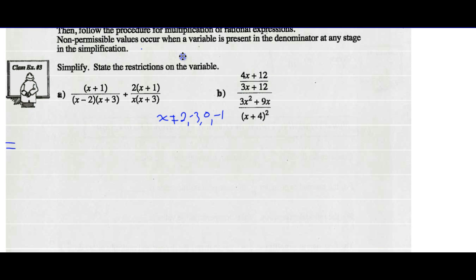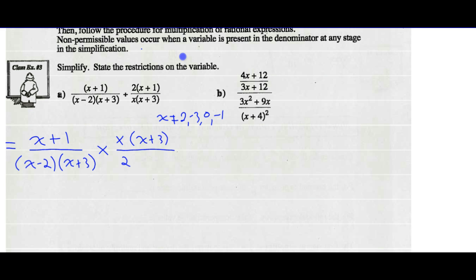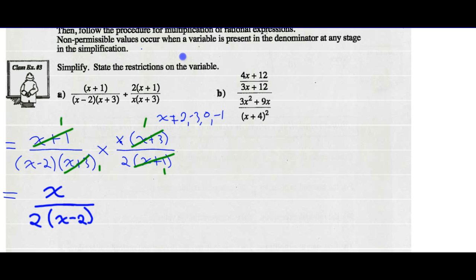Now I'm going to change the division statement to a multiplication statement. My first rational expression stays the same; I change division to multiplication and take the reciprocal of the divisor. Now I reduce any numerator with any denominator. x plus 1 divided by x plus 1 reduces to 1. x plus 3 divided by x plus 3 reduces to 1. I can't find other common factors, so I multiply. My numerator is 1 times x times 1, which is x. My denominator is x minus 2 times 1 times 2 times 1, which is 2 times x minus 2.